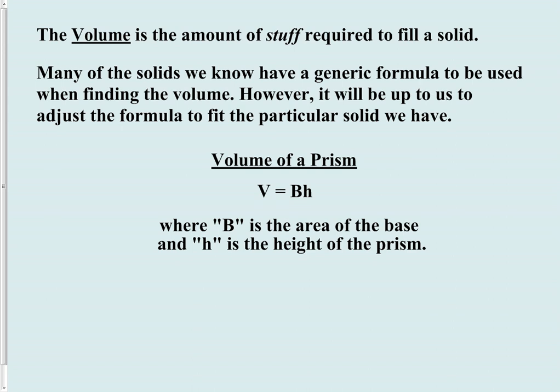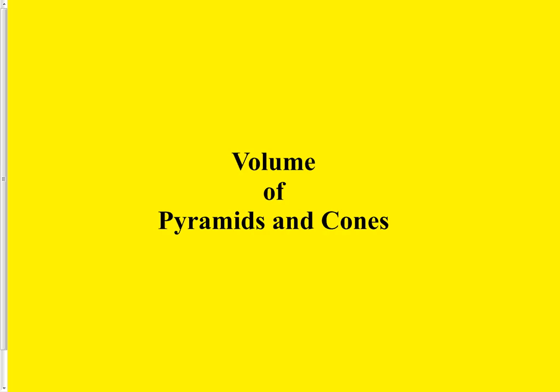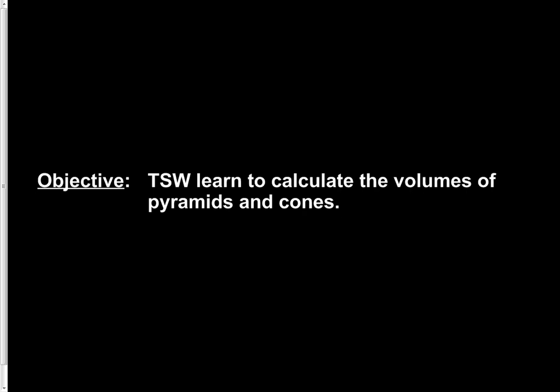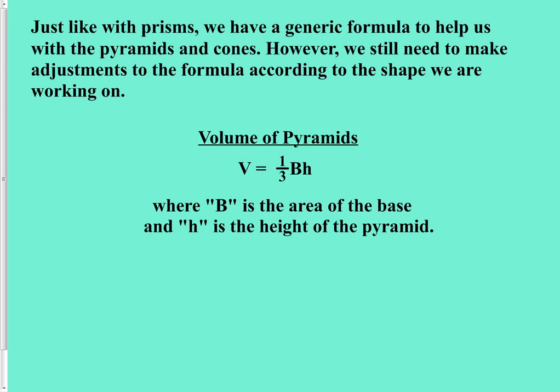The next day, we went on and looked at the figures that only have one base — the pyramids. The formula is very similar to the formula for prisms, except that with only one base, we end up with exactly one-third of that formula. So our formula is V = (1/3)Bh — one-third times the area of the base times the height. In a pyramid, it is almost impossible to get the base incorrect. Be careful: this is the actual height of the pyramid, not the slant height. If you're having trouble distinguishing height from slant height, go back to your vocabulary and look it up.